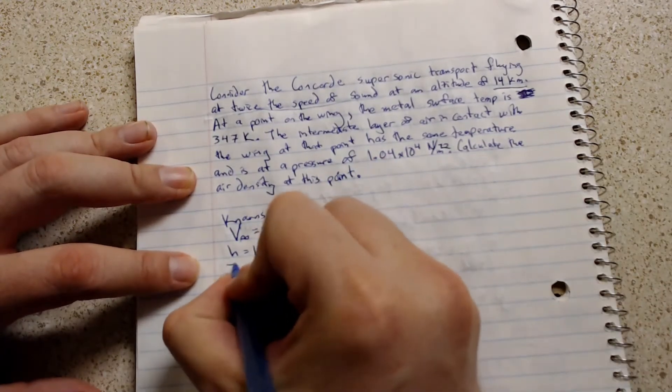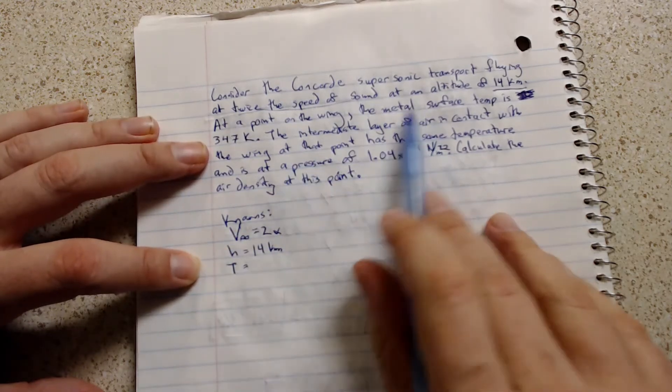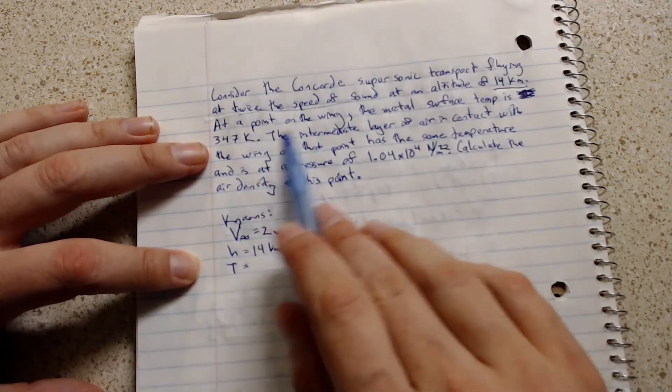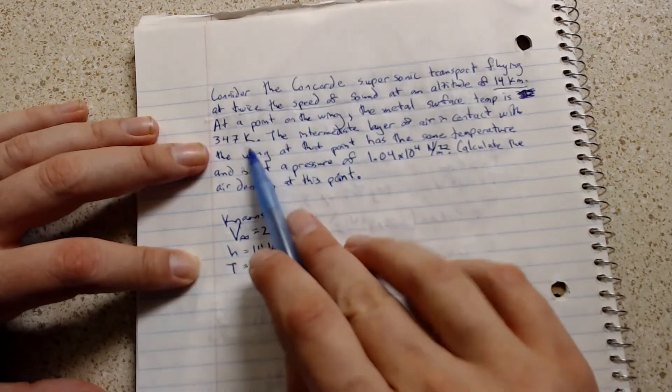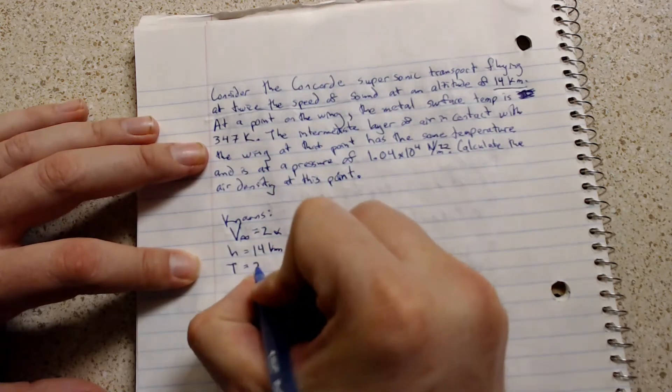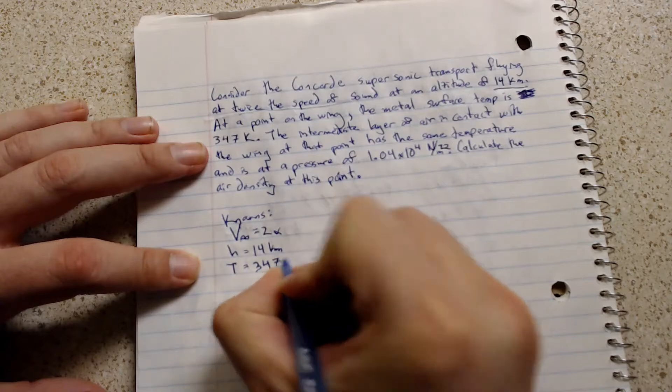Let's see the temperature. Now, remember this is the temperature at the point on the wing. It's not the free stream temperature. So that's going to be 347 Kelvin.